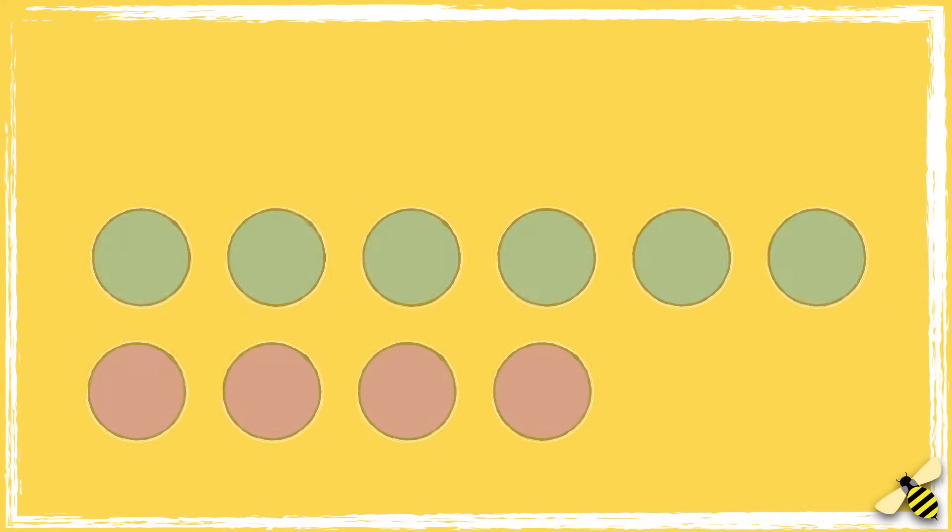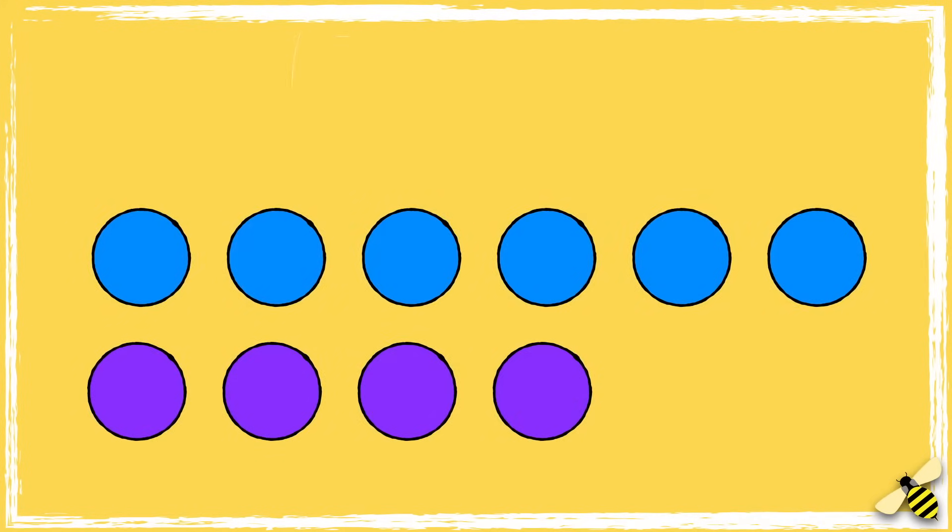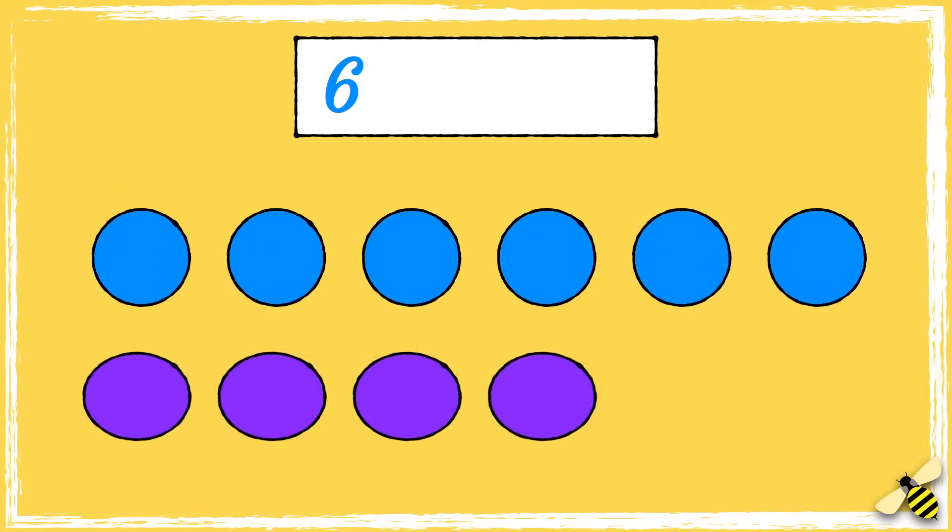Here are some counters. Let's find the difference between them. There are six blue counters and four purple counters.